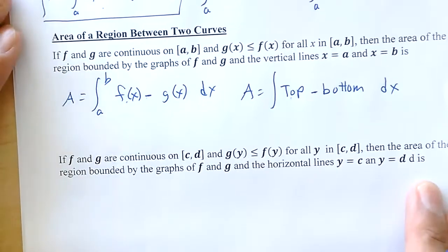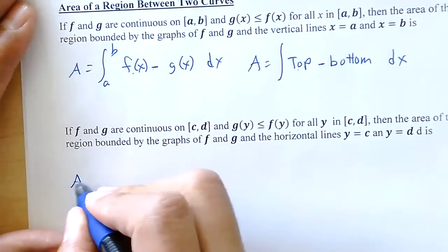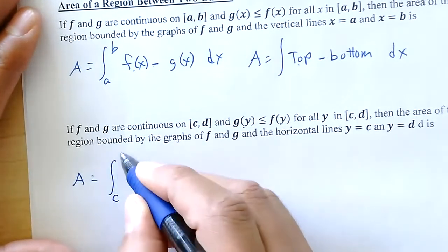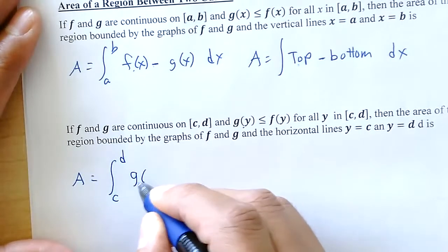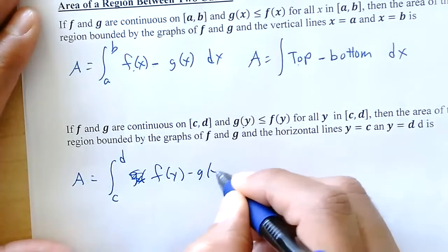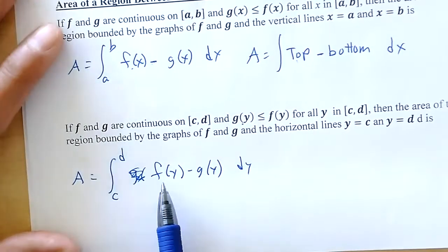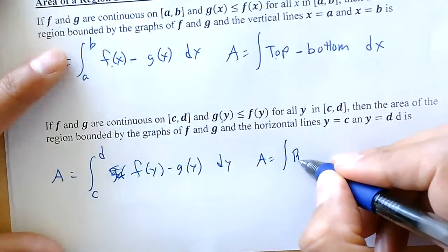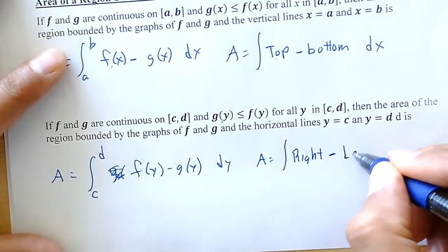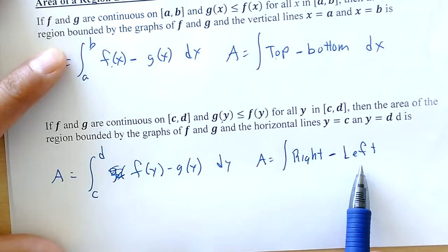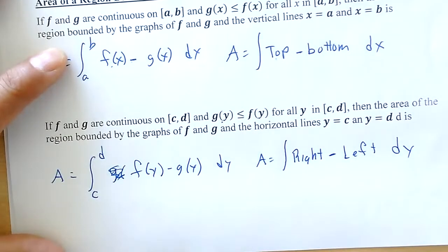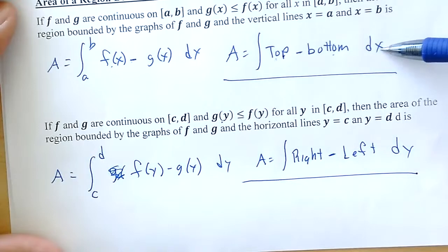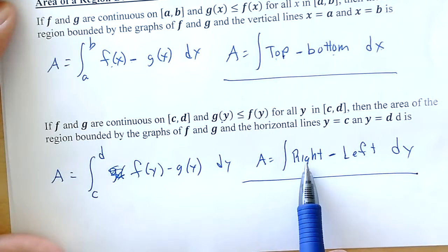Sometimes we won't be going top minus bottom. When our functions are with respect to y — when g of y is smaller than f of y — I integrate f of y minus g of y dy. I need to figure out which one is larger horizontally. We look at the function on the right and the function on the left: right minus left with respect to y. We need a graph to see which function is on the right and which is on the left.